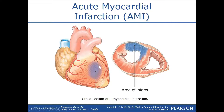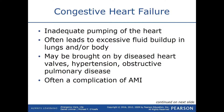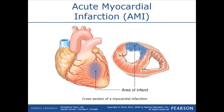Once heart tissue starts to die, it does not come back — it's going to stay dead. So one outcome is this patient will most likely have congestive heart failure. Second, the conduction tissue — the pathways of electricity in this region — are not going to work as adequately as they once were, and that can also lead to arrhythmias down the road. This is one example of how one medical condition can lead to multiple other conditions.